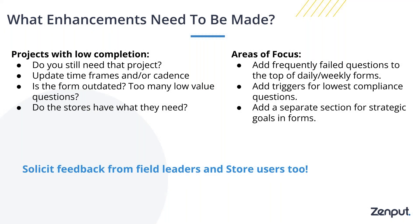Once you've looked through those KPI reports and project recap reports and have a good grasp on the forms, it's time to think about what enhancements need to be made. One really important thing here is to make sure that you solicit feedback from your field leaders and store users — make sure they feel a sense of ownership for the work they need to be doing. If they have strong feedback about better ways to set up forms, projects, or triggers, listen to that and strike a balance between getting the information you need as an admin versus overburdening store users with low-value work or low-value questions.